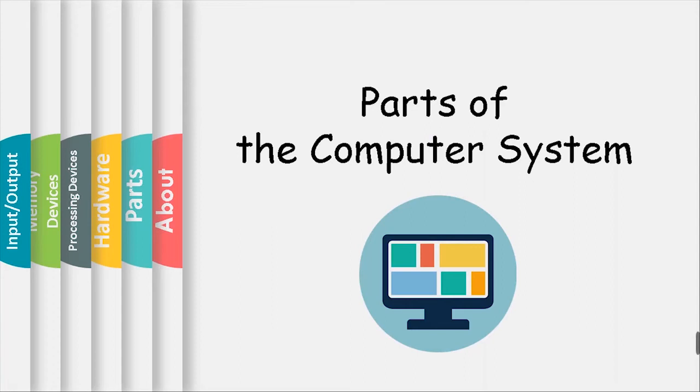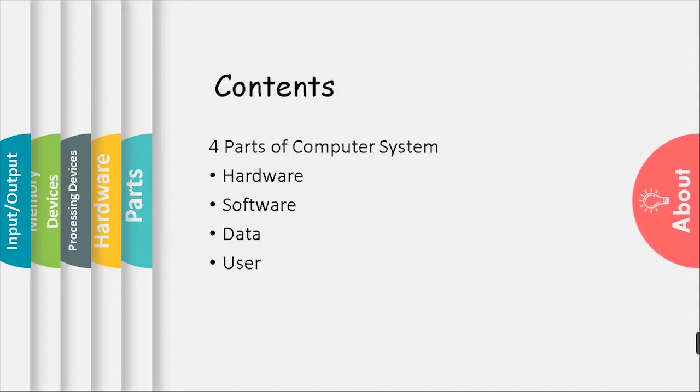Good day guys! Our topic for today is parts of the computer system. There are four parts of the computer system: hardware, software, data, and user.